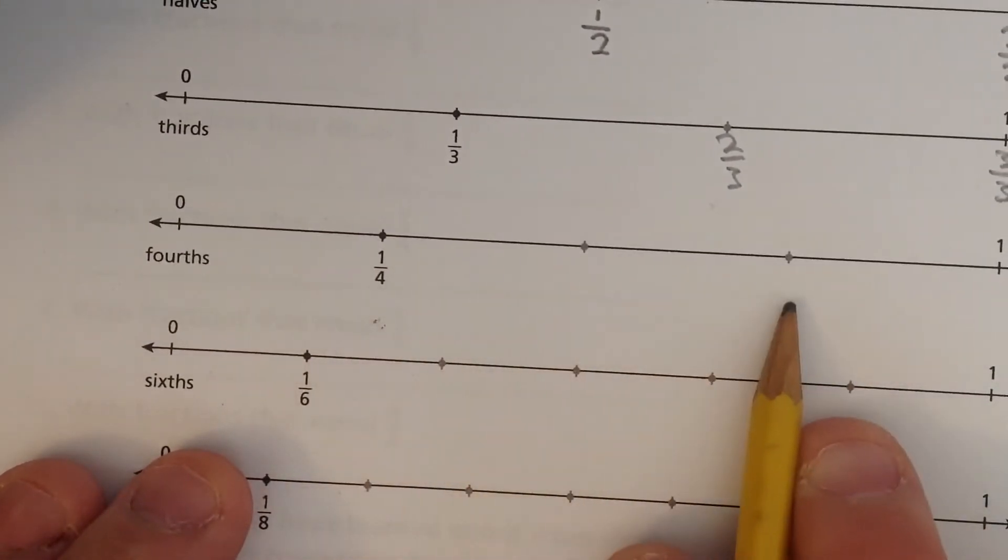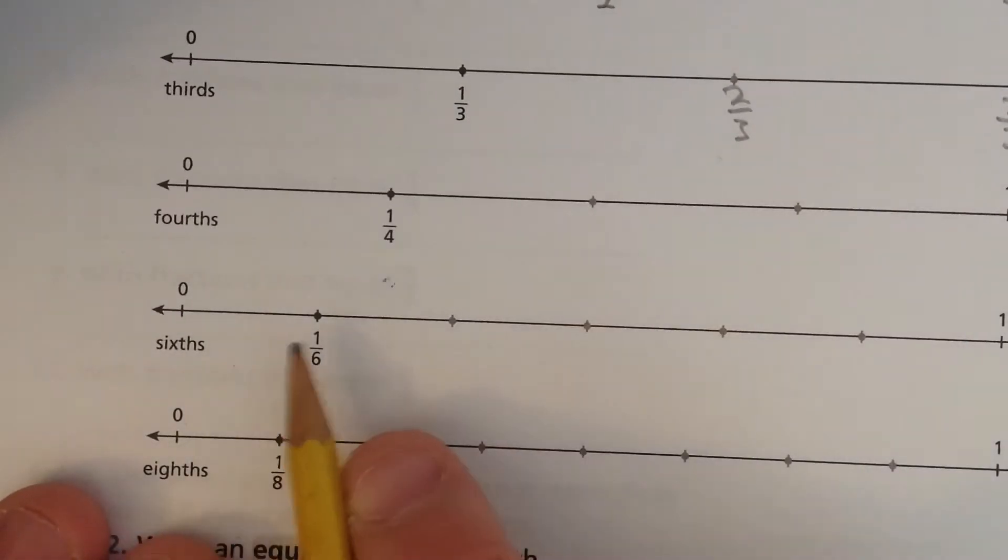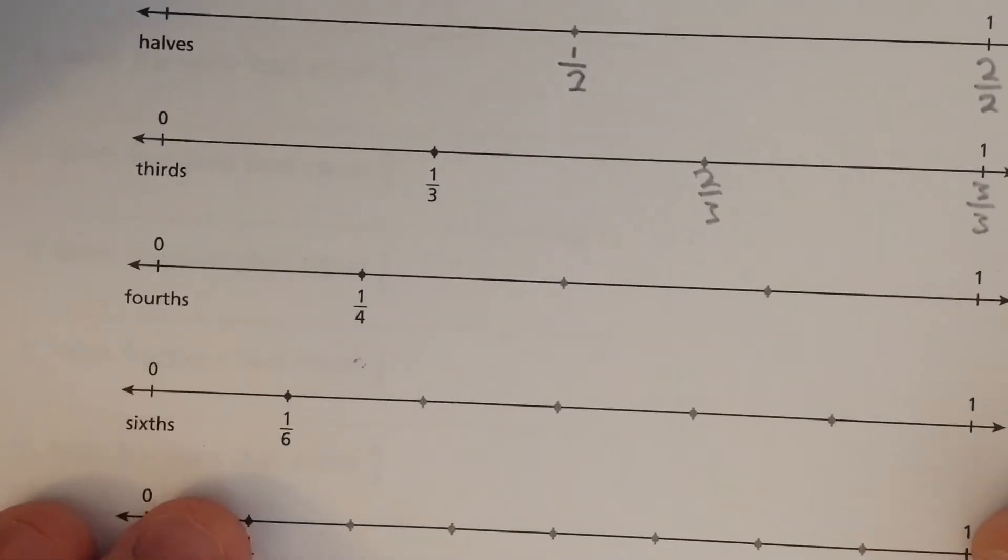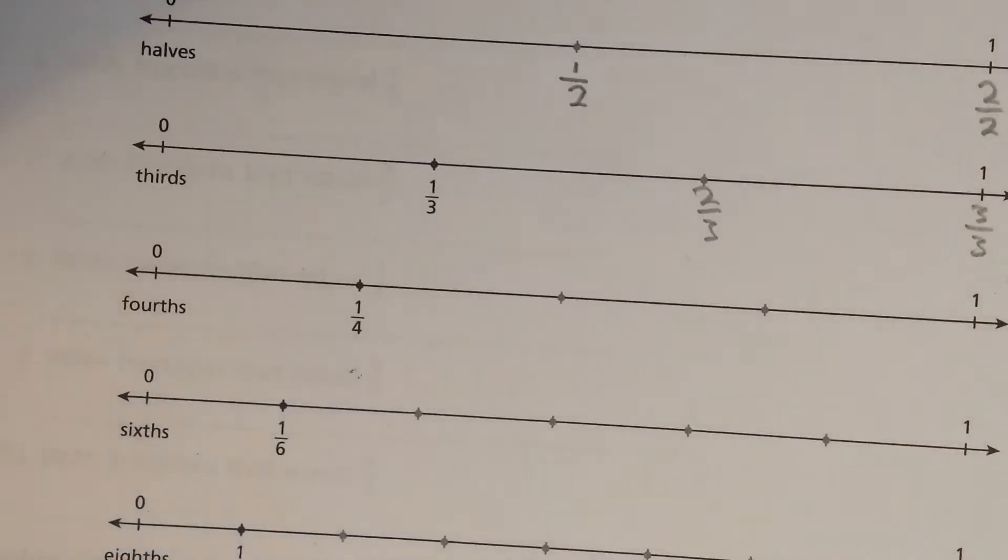Then same. One-fourths, two-fourths, three-fourths, four-fourths, one-sixths. I think you get the picture. And then once you line them all up, you'll be able to see which ones line up.